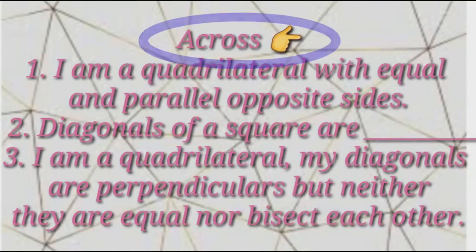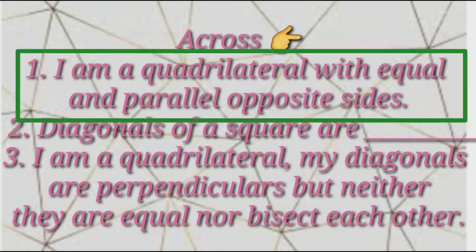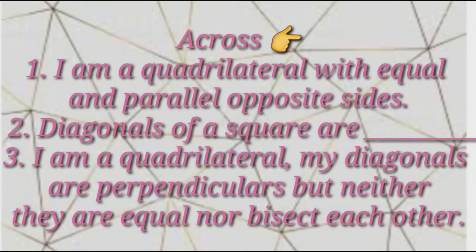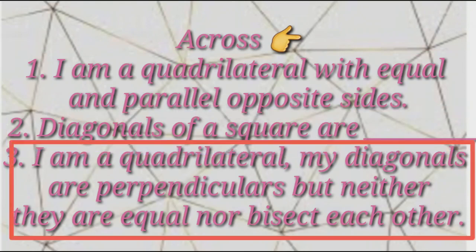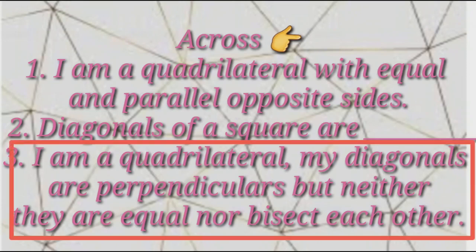Questions across are: First, I am a quadrilateral with equal and parallel sides. Second, diagonals of a square are dash. Third, I am a quadrilateral — my diagonals are perpendicular, but neither they are equal nor bisect each other.